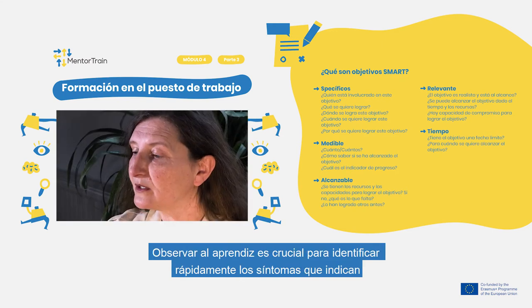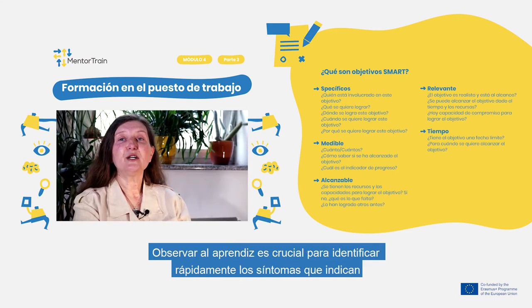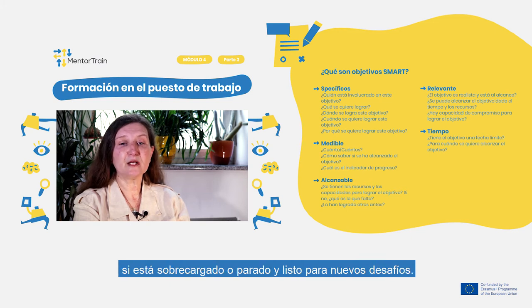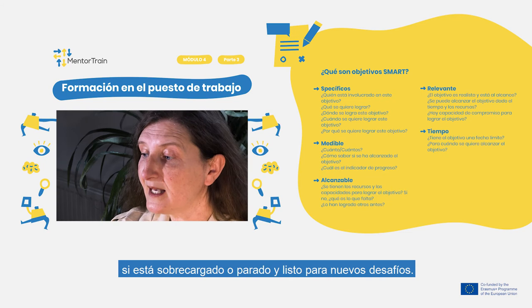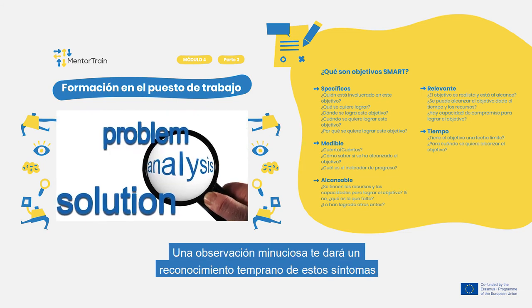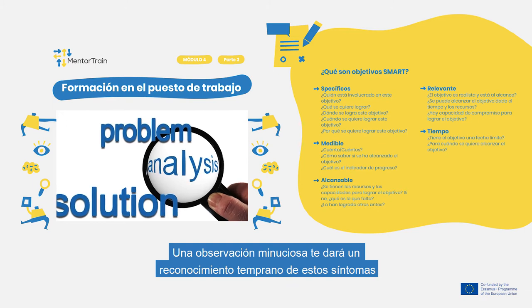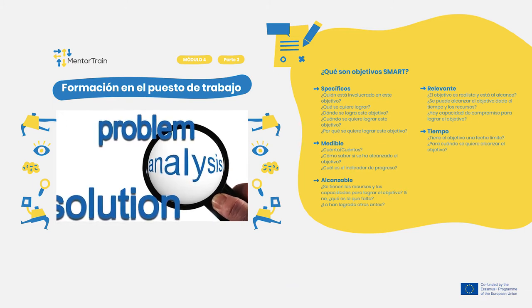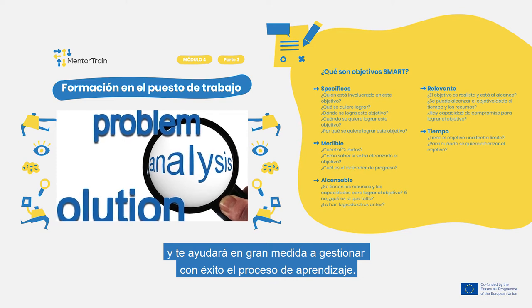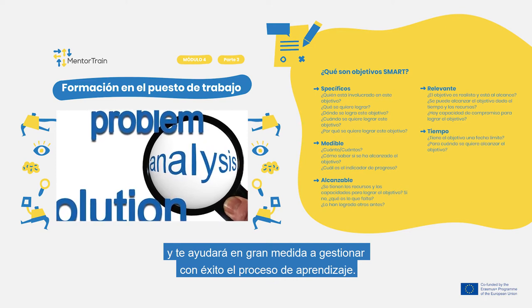In addition to the SMART goals method, keeping a good eye on the apprentice is crucial for promptly identifying symptoms that indicate the apprentice is overloaded or standing still and ready for new challenges. Close observation will give you early recognition of these symptoms and will greatly assist you in successfully managing the apprenticeship process.